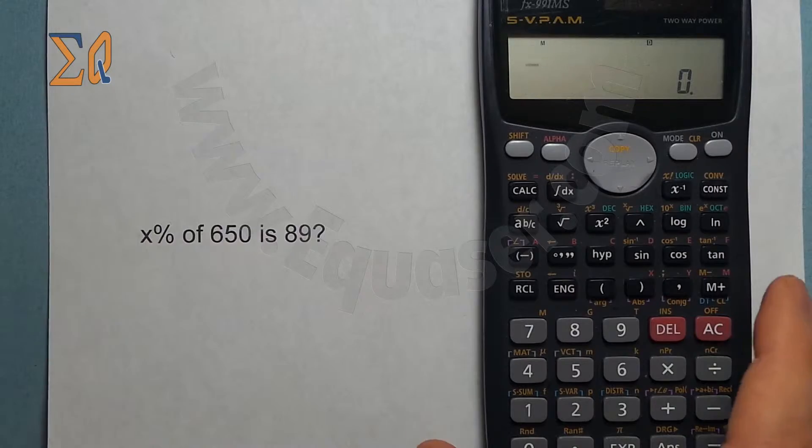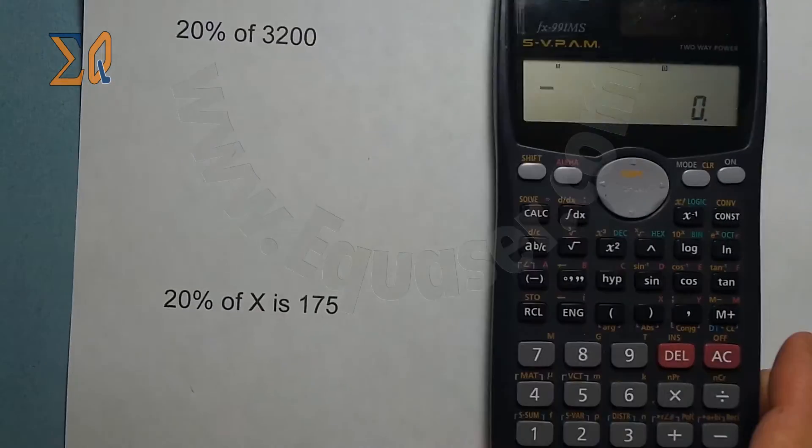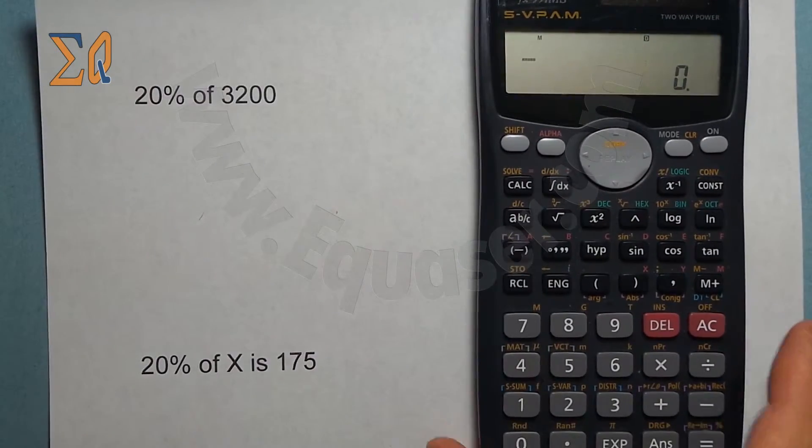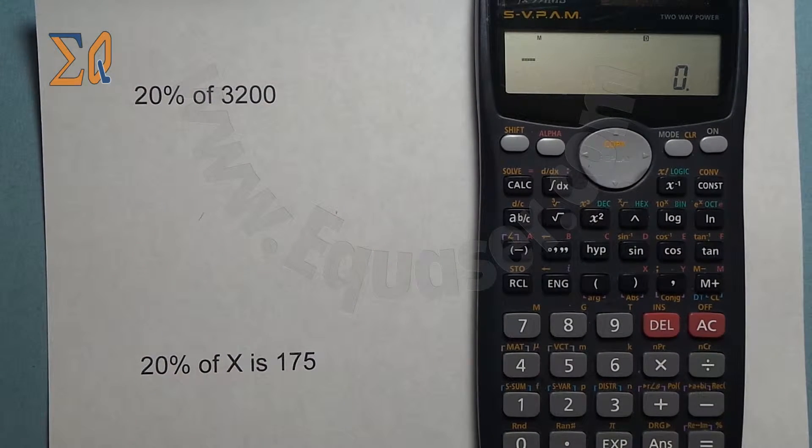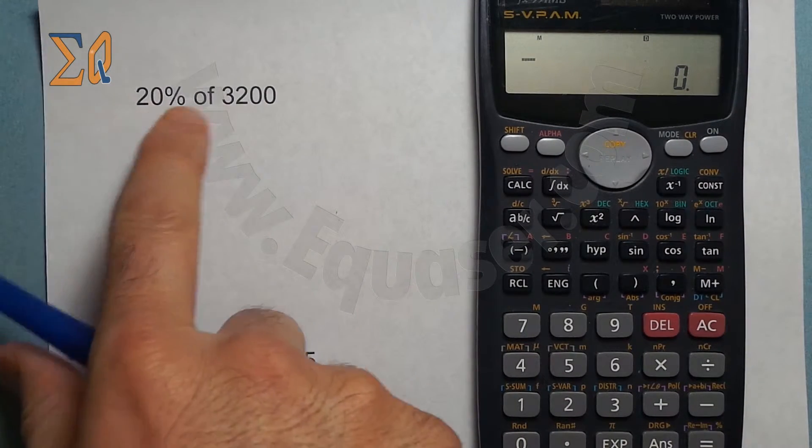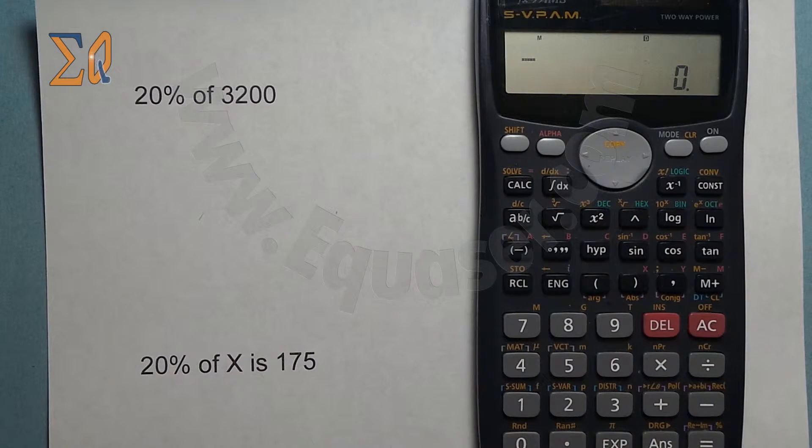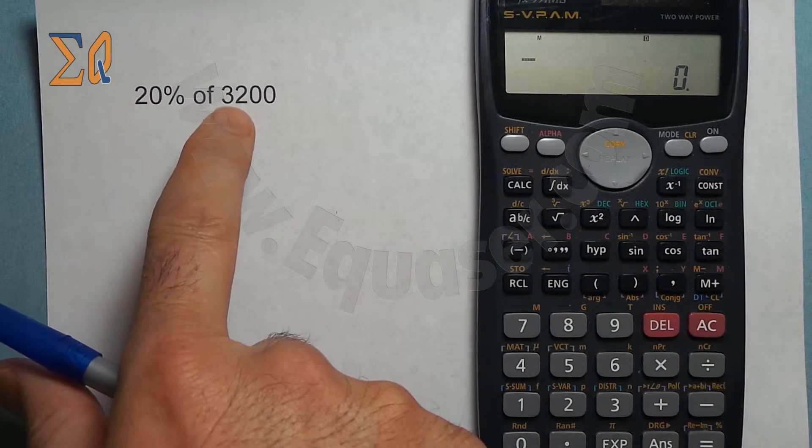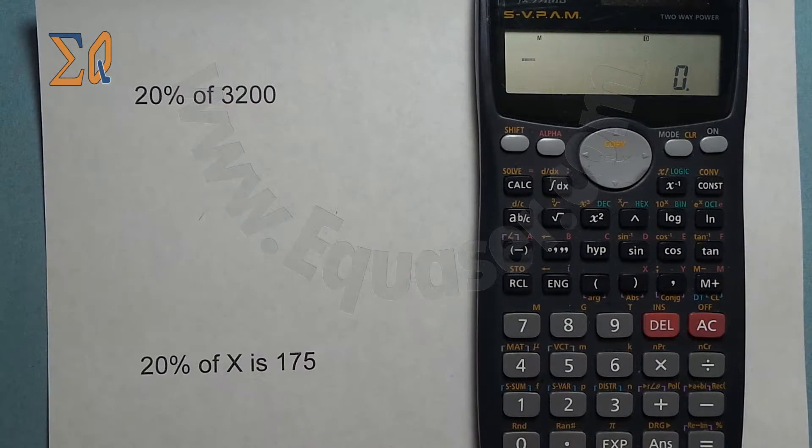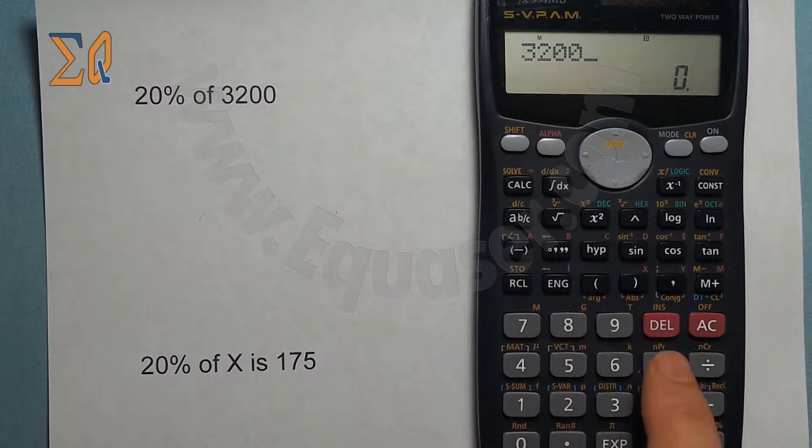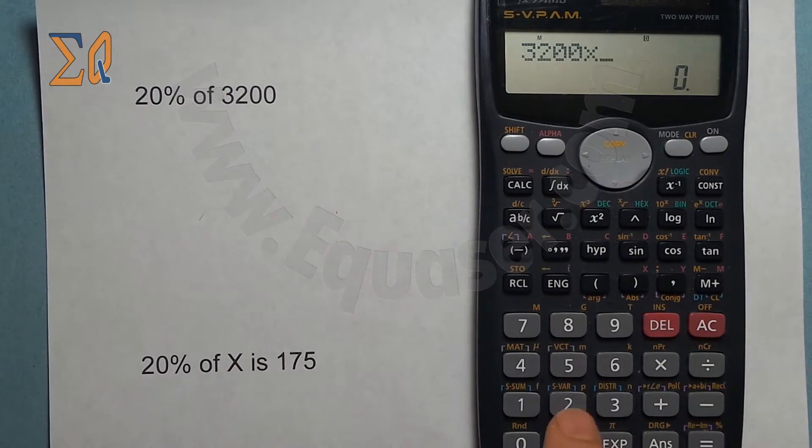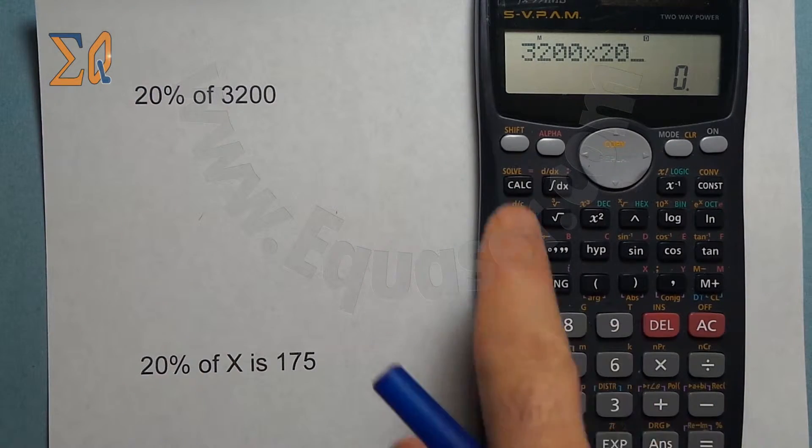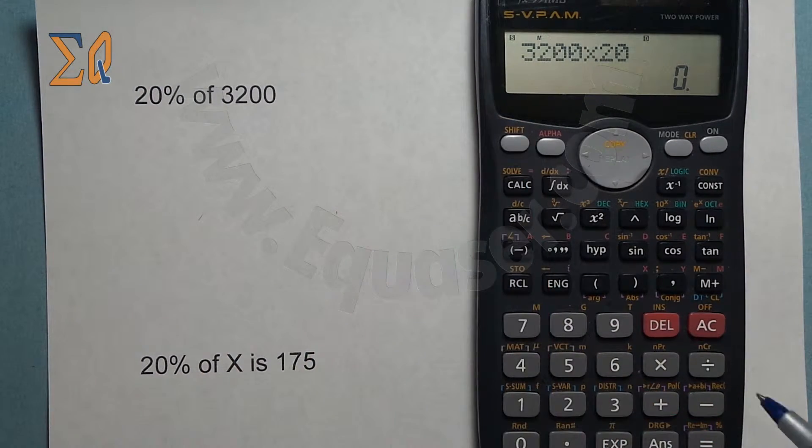The calculator by default can only solve this one: 20% of 3200. You can start either way. We can say 3200 times 20, and then you press shift, and here is percent. So that is 640.